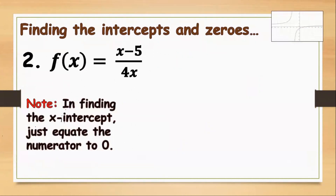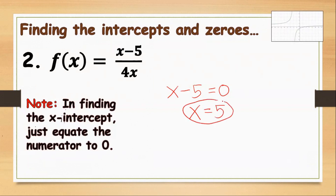Let's continue with number 2: f(x) equals x minus 5 over 4x. Let's find the x-intercept first. Equating the numerator to 0, we have x minus 5 equals 0. Therefore x equals positive 5. The x-intercept is at x equals 5, or as a point, (5, 0).